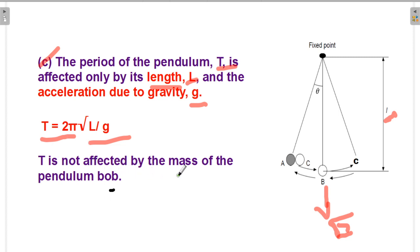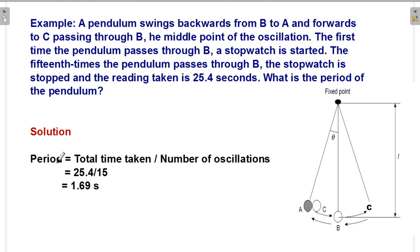T is not affected by the mass of the pendulum bob. Whether the bob is made of iron, chromium, or copper, it does not matter — the period of oscillation will not change. For example: a pendulum swings from B to A and back to C through B. B is the middle point. A stopwatch is started the first time the pendulum passes through B.